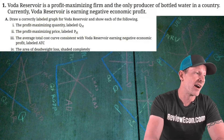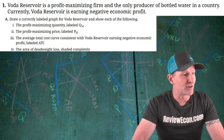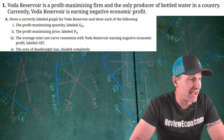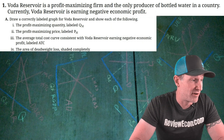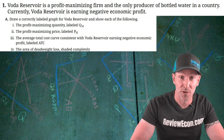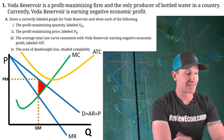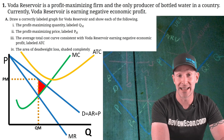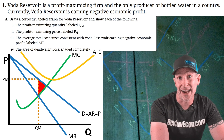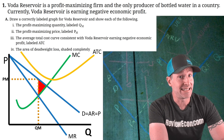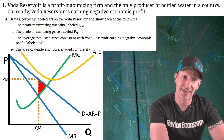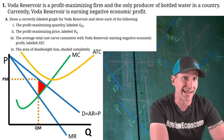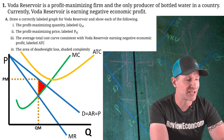The first question features Voda Reservoir, a profit-maximizing firm and the only producer — so they're a monopoly — and they're currently earning negative economic profits. We have to draw the graph for this monopoly. We have the downward sloping demand curve with marginal revenue below, MR equals MC quantity labeled QM, price found at the demand curve above, and ATC above the price-quantity point. We also shade in the area of deadweight loss — that triangle right there. If you have all that, you'll get yourself a few points.